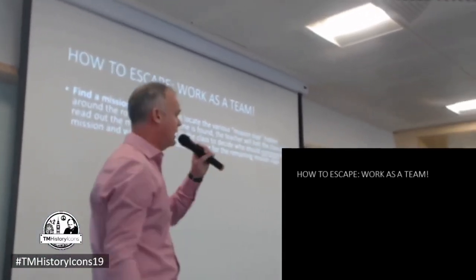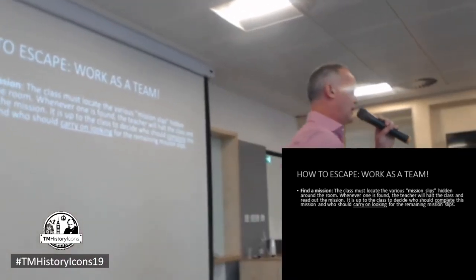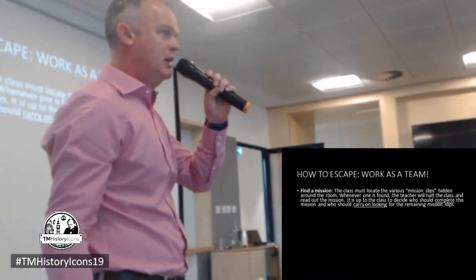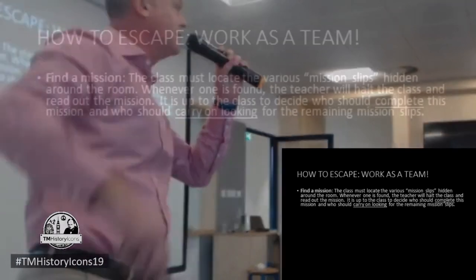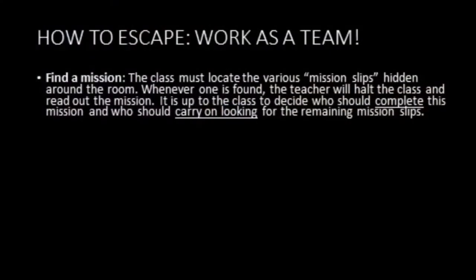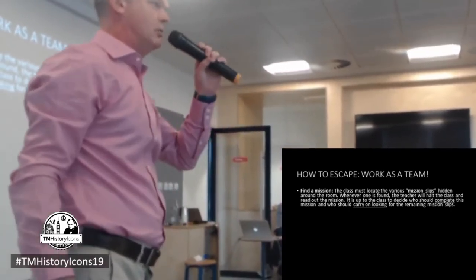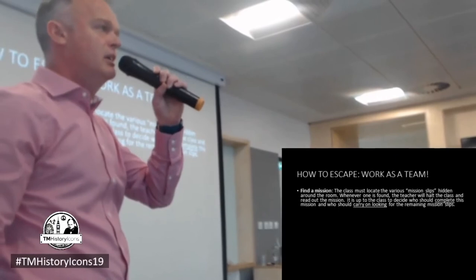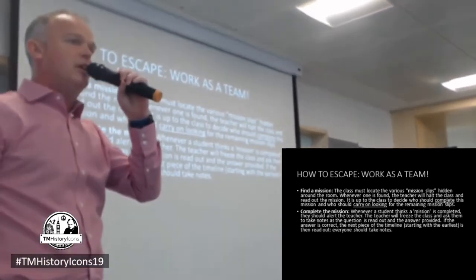And then this is where you get to how it operates in class. What the class has to do is firstly locate the mission slips — in other words, the ten questions. You should call them mission slips, but it's very simple: you're just looking at ten questions that you've written on pieces of paper and hidden around the room. Some might be on the ceiling. You might put them on the blinds if you have them in your room, and then wind the blind up. Put one underneath the table. As soon as anyone finds one of those mission slips, they wave it in the air like Willy Wonka's golden ticket and freeze the class. Then they read out the mission, they read out the question. The class has to decide who will now try to solve that question and who's going to carry on looking for the remaining slips.